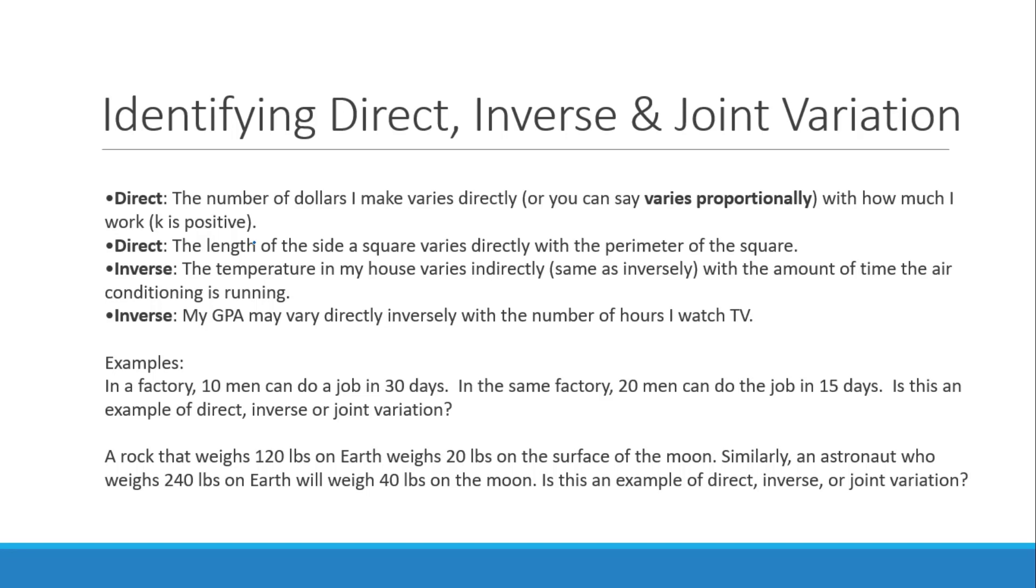Or my GPA may vary directly inversely with the number of hours of TV I watch. So as I watch more TV, my GPA may go down because I'm not studying for my classes. So let's look at an example. In a factory, 10 men can do a job in 30 days. In the same factory, 20 men can do the job in 15 days. Is this direct, inverse, or joint? Now, it's not joint because it only involves two variables, men and days. If there was something else involved, then it would be joint variation.